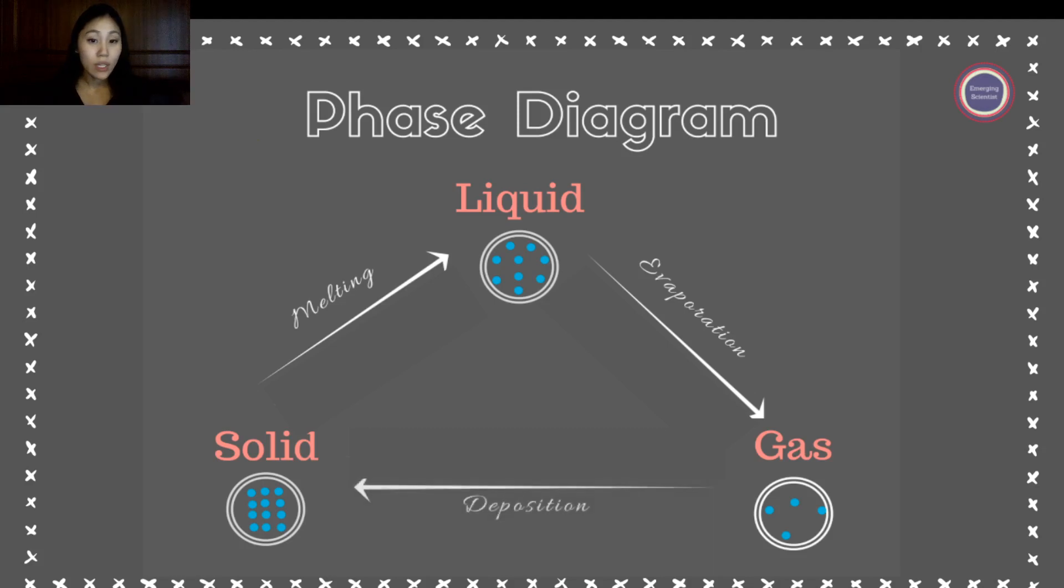The next phase is known as deposition, and that phase is going from a gas to a solid state. This forms the first phase diagram going from solid to liquid to gas and back around. We're going to go the other way around now and take a look at what that phase diagram looks like.